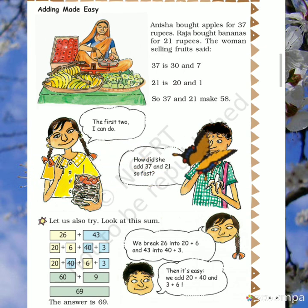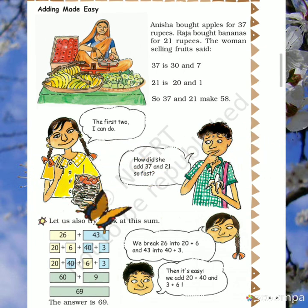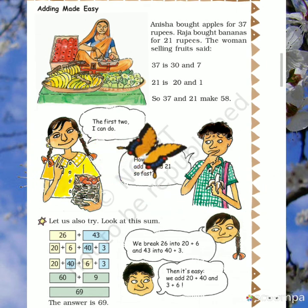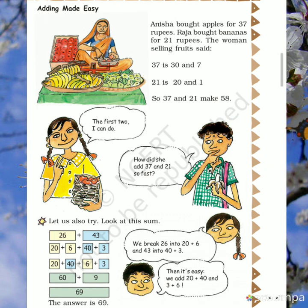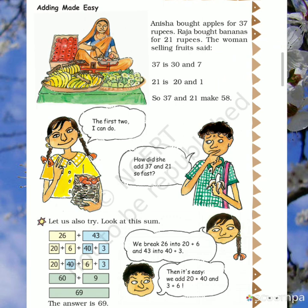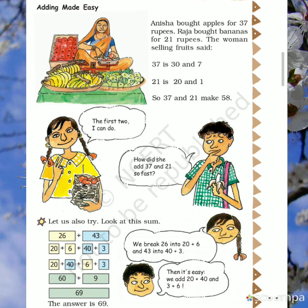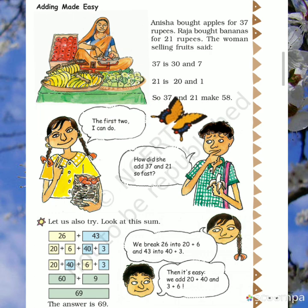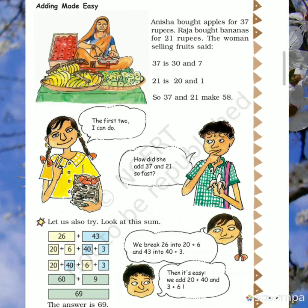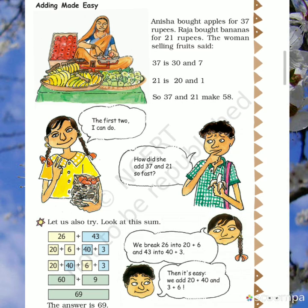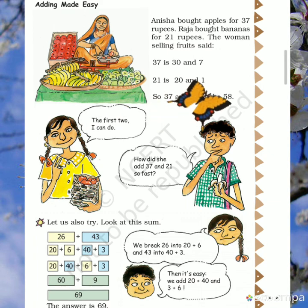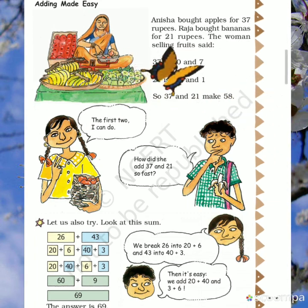Next page is Adding Make Easy. There are two children. Anisha bought apples for 37 rupees and Raja bought bananas for 21 rupees. A woman quickly said: 37 is 30 and 7, 21 is 20 and 1, so 37 and 21 make 58. The children are asking how she calculated so quickly.